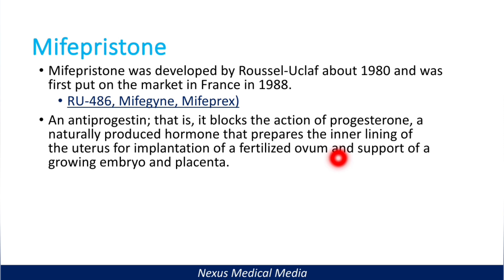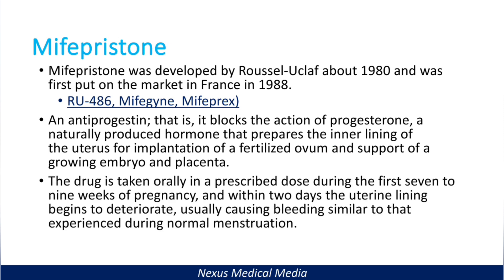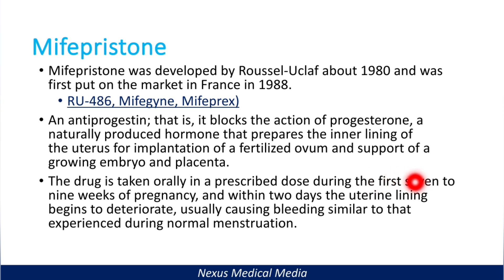If you take mifepristone you get the opposite effect, since it is antiprogesterone. When the drug is taken orally in a prescribed dose during the first seven to nine weeks of pregnancy, within two days the uterine lining begins to deteriorate, usually causing bleeding similar to that experienced during normal menstruation.